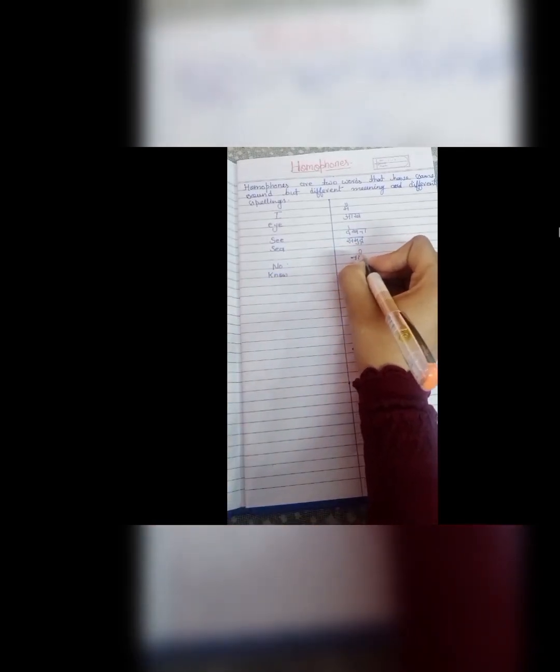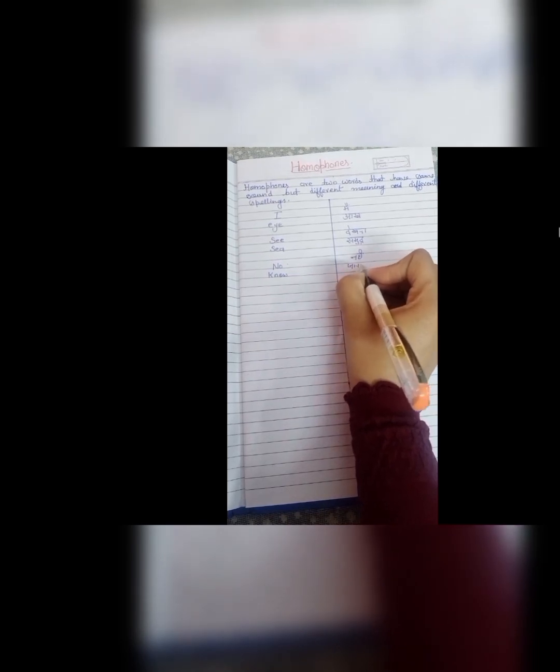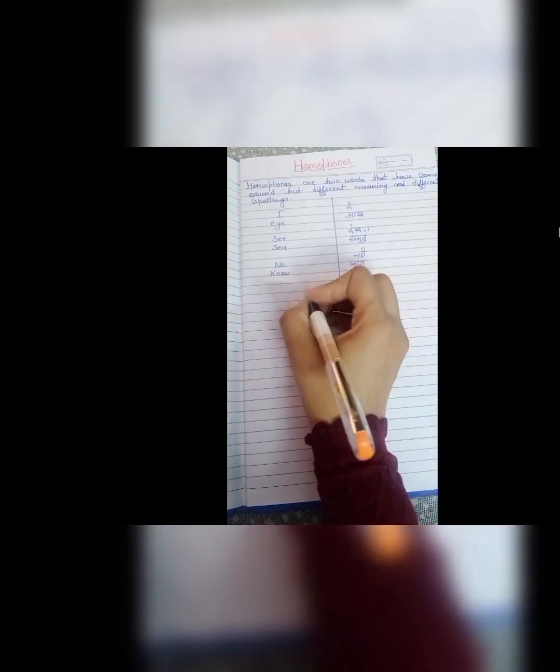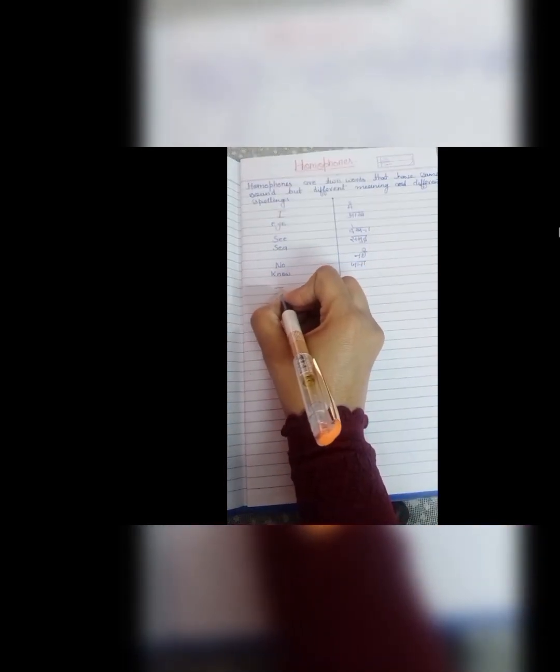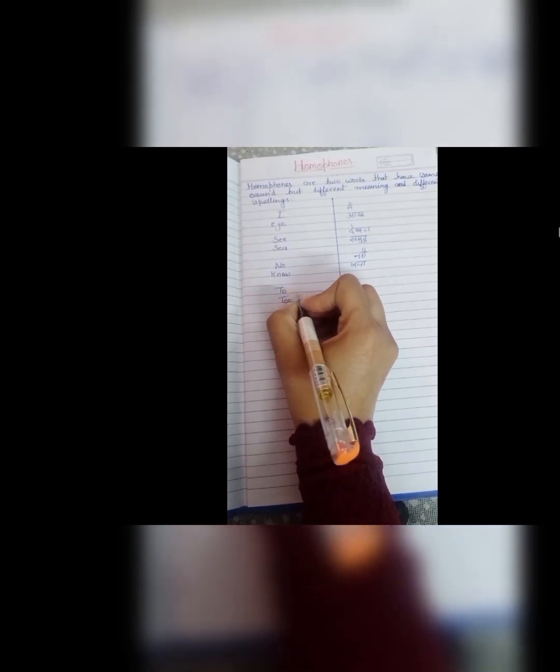Next one is no. N, O, no. And K, N, O, W, know. N, O, no means nahi. Kisi chiz ko refuse karna. And K, N, O, W means jana. I know about this.